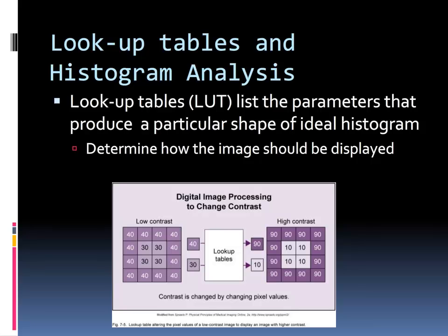Unlike rescaling, the same values are not applied to all of the pixels. With lookup tables, a table of pixel values tells the computer how to adjust. So in the example we see here, pixel values of 40 are reassigned a value of 90, and pixel values of 30 are reassigned a value of 10. Why would we want this? Our human eyes may not be able to detect the difference between the pixel values of 40 and 30 — they likely appear too similar. But the difference between 90 and 10 is hard to miss.